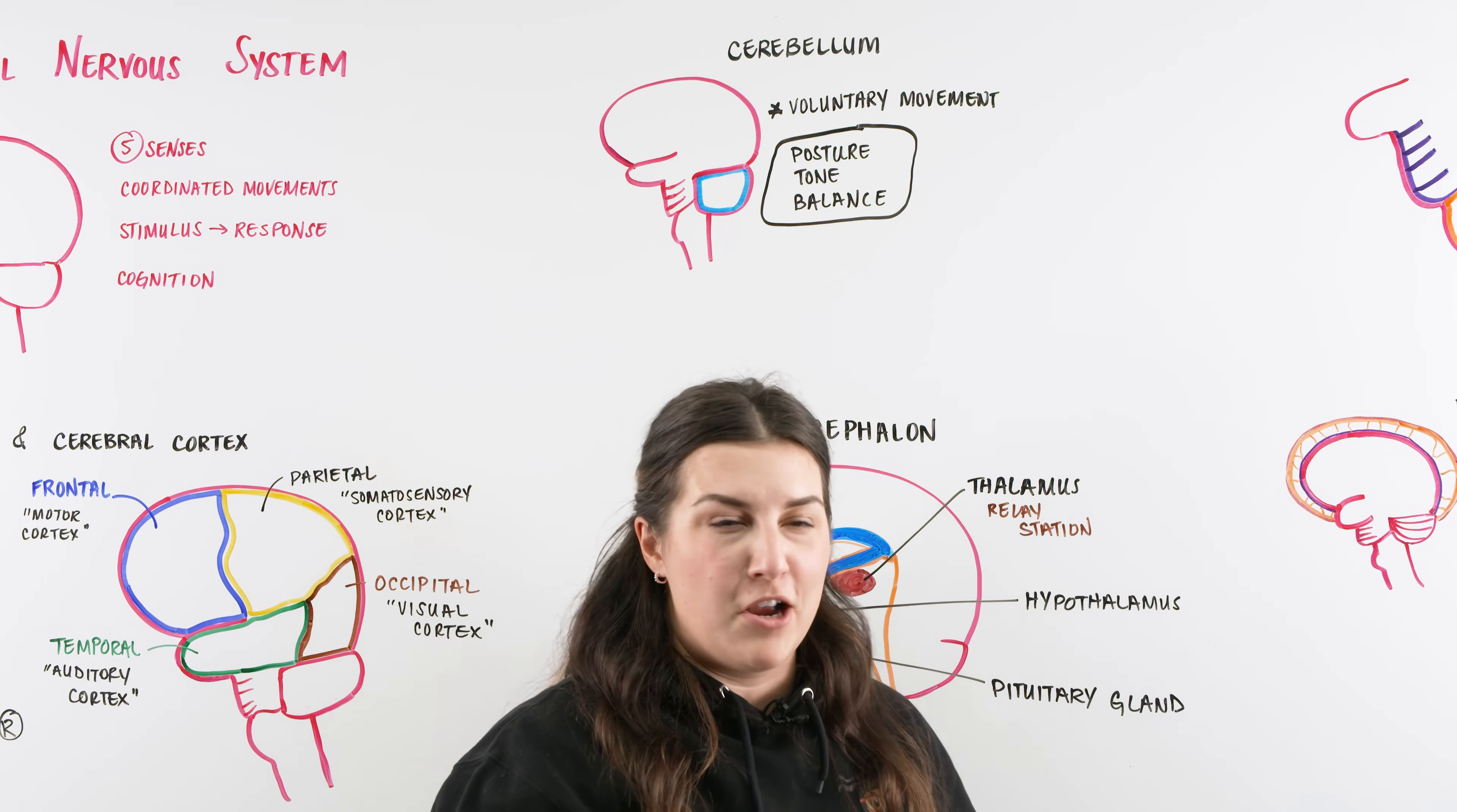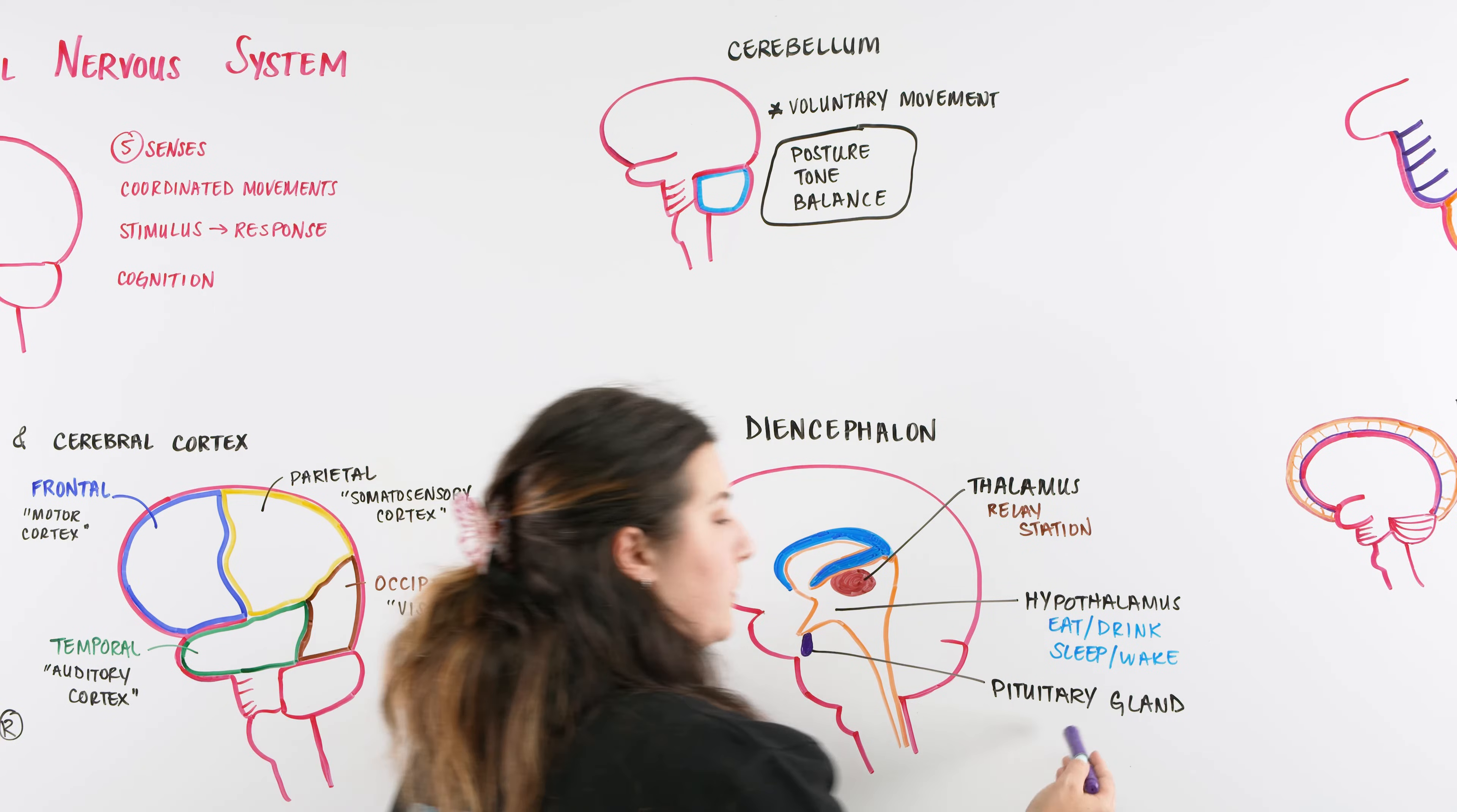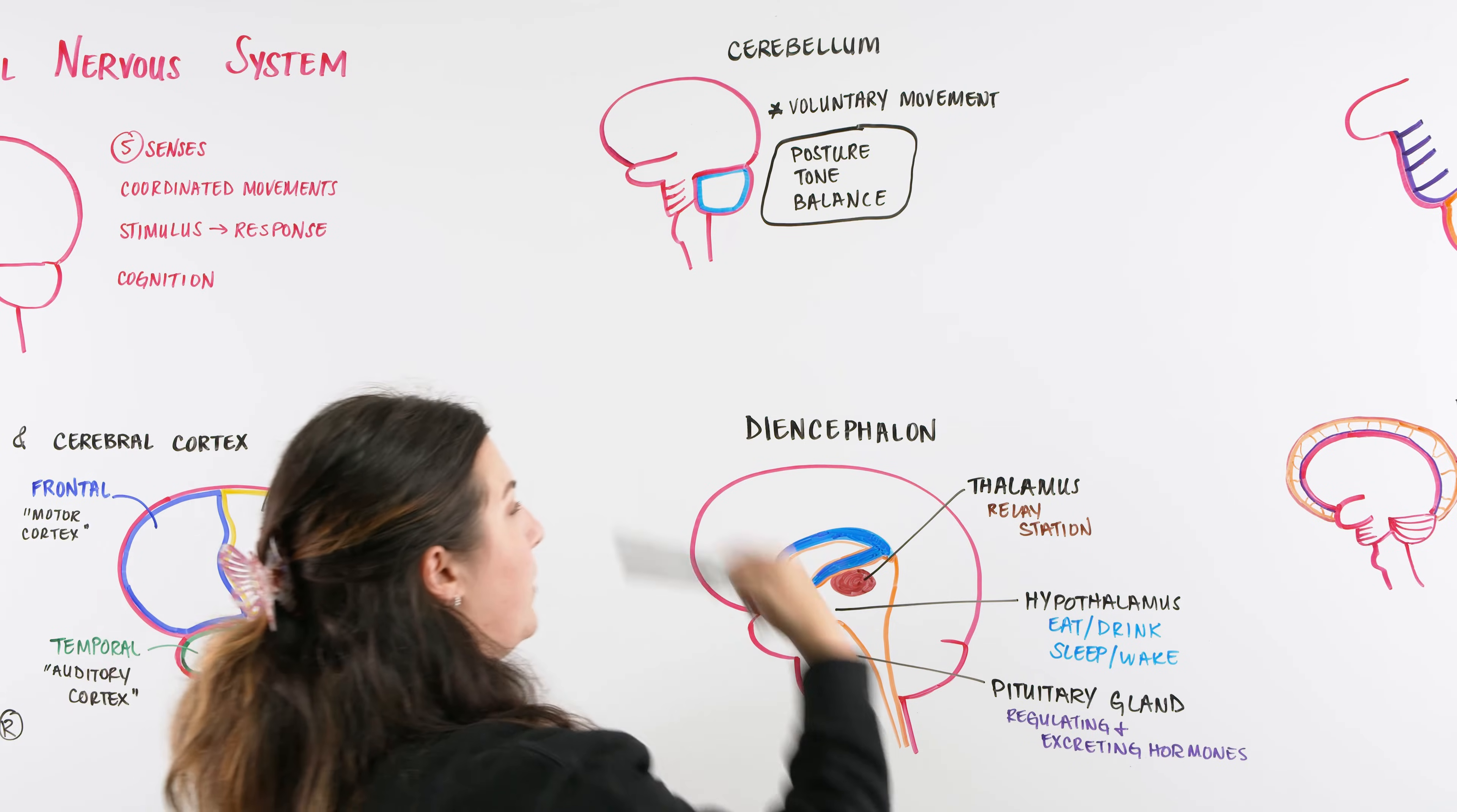Underneath the thalamus is our hypothalamus. The hypothalamus is the area of our brain that takes care of the basic needs, like our sleep-wake cycle, our eat-drink cycle, anything that has to do with our basic needs. The pituitary gland plays a role for us in regulating and excreting hormones. I'll have a video on each separate part of the brain up on the channel soon, so you'll be able to really dive into each one of these.